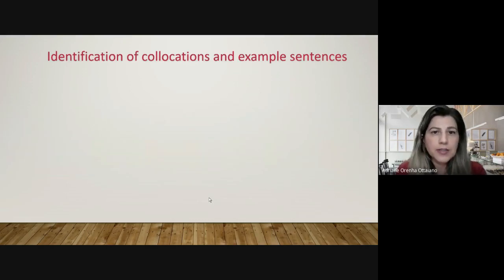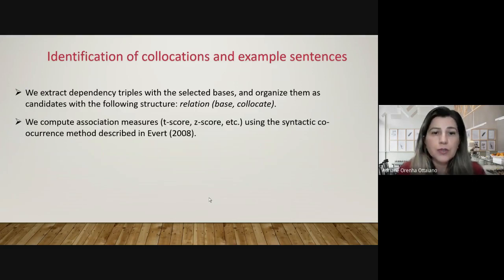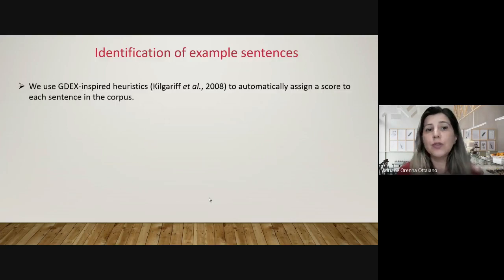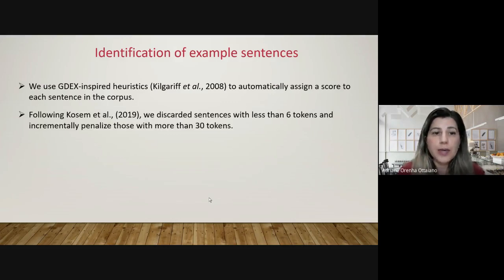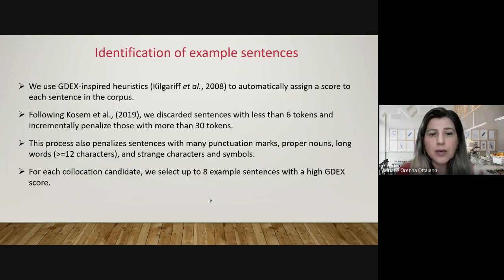In terms of identification of collocations and example sentences, we extract dependency triples with the selected bases and organize them as candidates with the following structure: relation–base–collocate. We compute association measures — T-scores, Z-scores, etc. — using the syntactic co-occurrence method described in Evert. Candidates with less than one co-occurrence per million dependencies are discarded, and we use CDEX-inspired heuristics to automatically assign a score to each sentence in the corpus. Following Evert et al., we discarded sentences with less than six tokens and incrementally penalized those with more than 30 tokens. This process also penalizes sentences with many punctuation marks, proper nouns, long words, and strange characters and symbols. For each collocation candidate, we select up to eight example sentences with a high quality score.